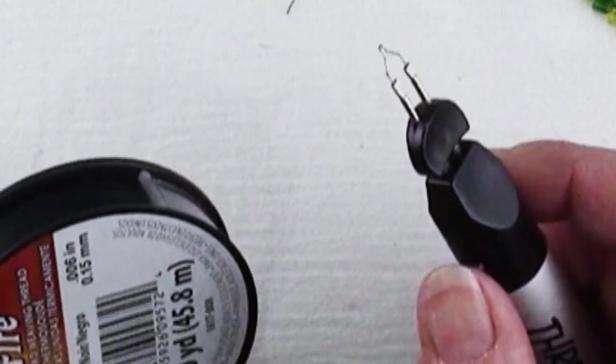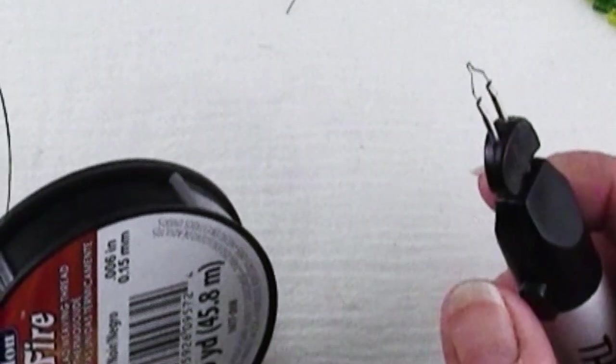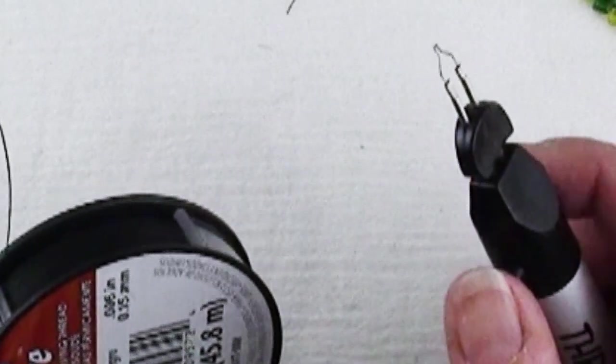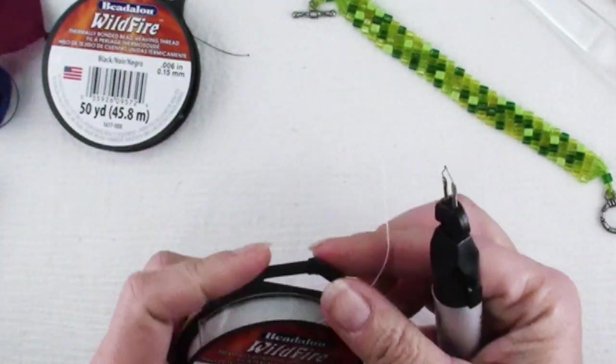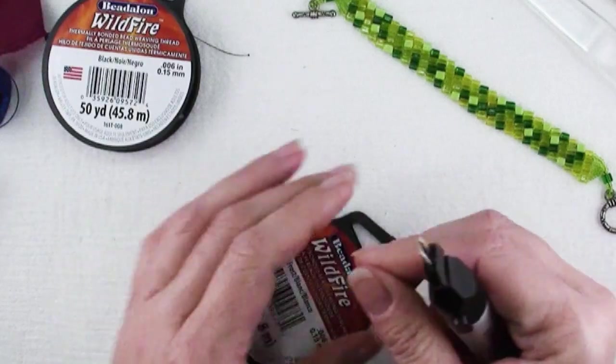I've seen folks use it to seal the edges of ribbon, but I don't really think it's that attractive, but you can try it if you have synthetic ribbon. Now let's go on to six things you should never do with a thread burner.